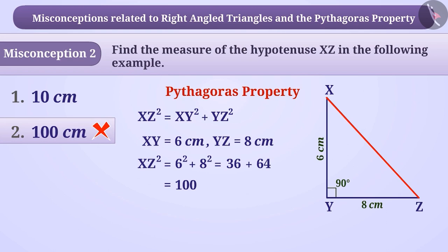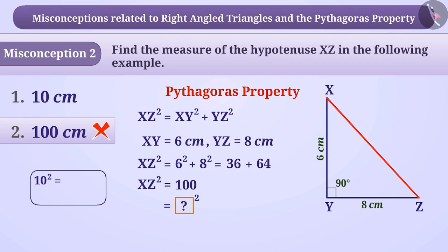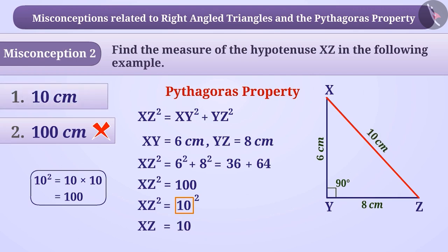Note that 100 is the value of XZ square. To find the value of XZ, we need to find a number whose square is 100. Since 10 squared is equal to 10 multiplied by 10, which equals 100, we can say that XZ square is equal to 10 square. Hence, XZ is equal to 10. As a result, the correct answer to the given question is option 1.